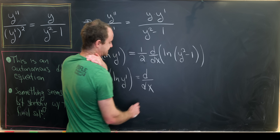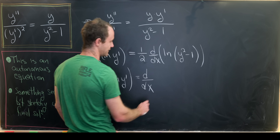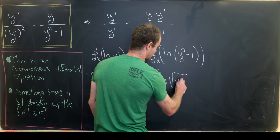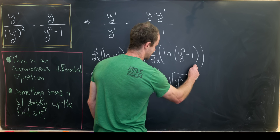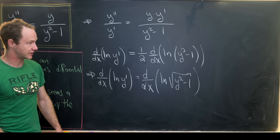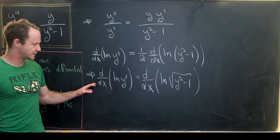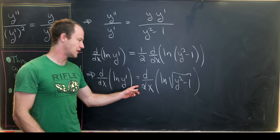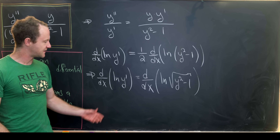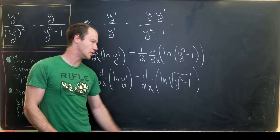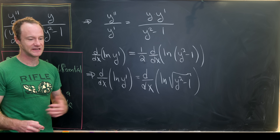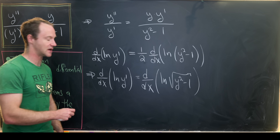In the end, we have the derivative with respect to x of the natural log of y prime equals the derivative with respect to x of the natural log of the square root of y squared minus 1. We've got the derivative of one function equaling the derivative of another, which means they are both antiderivatives of the same function and therefore differ by just a constant.